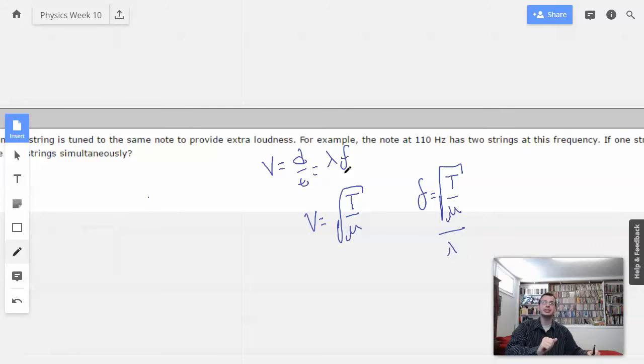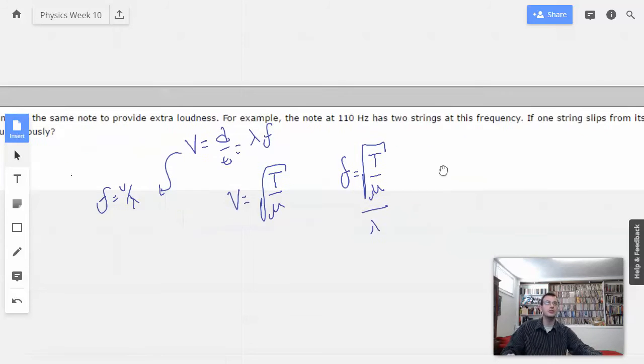So what I did was I just velocity over lambda from this guy over here. And I substituted in the square root of tension over mu for velocity.